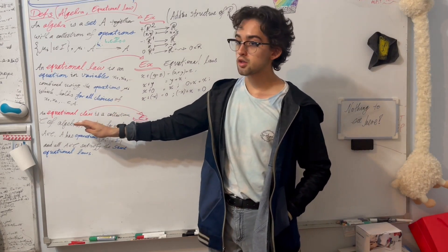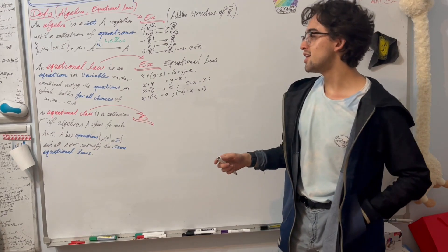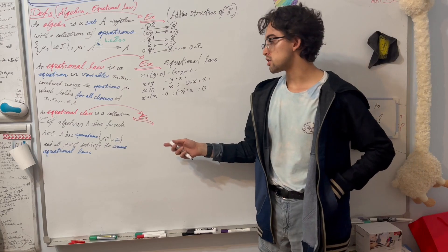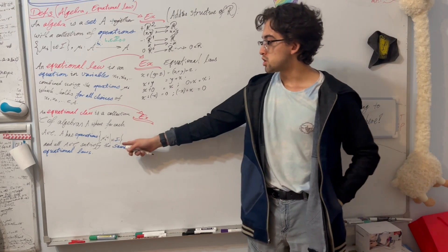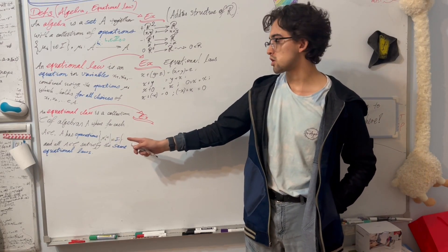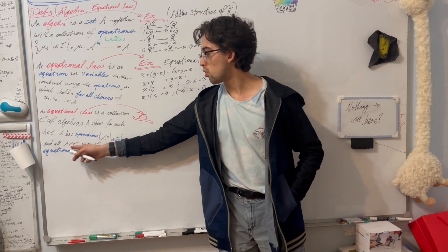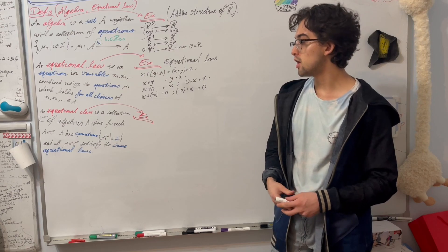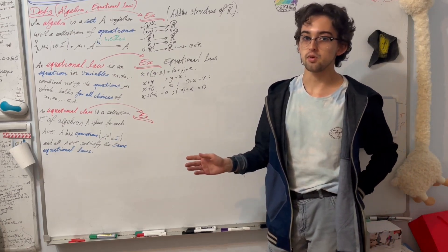An equational class, then, to add one more definition, is a collection C of algebras A, where for each algebra A in C, the operations are indexed over the same index set. And all the algebras in our collection, our equational class, satisfy the same equational laws.